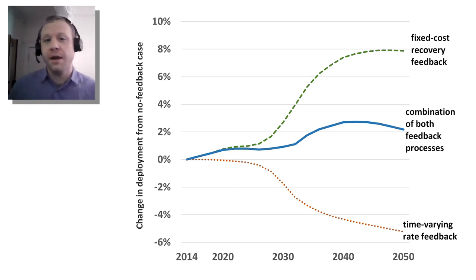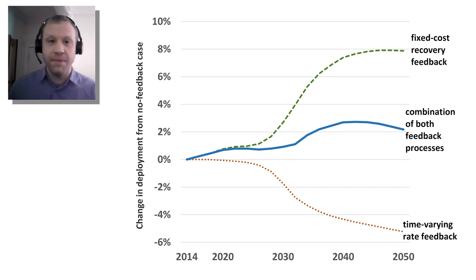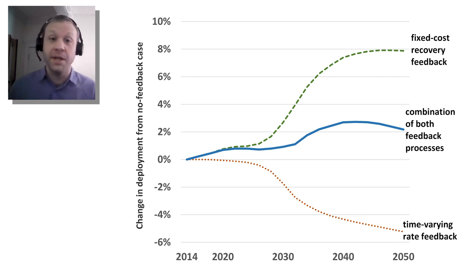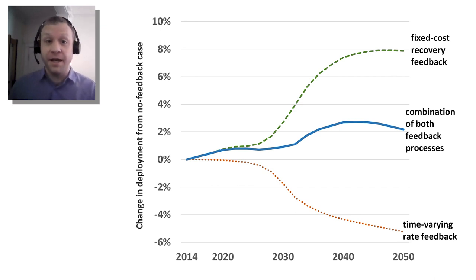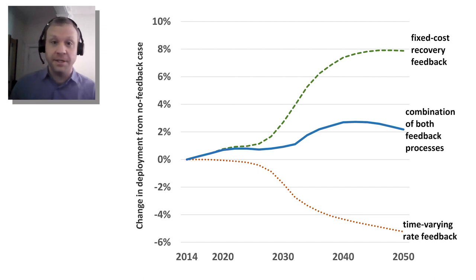The line at the bottom of that graph — the time-varying rate feedback — can you explain it? And does it surprise you that it leads to decreasing PV implementation? This is the second part of the story — an area of research that's received relatively short shrift. Assuming a net metering construct, there's a countervailing feedback that can cool off and regulate the system, offsetting the fixed cost recovery loop. As more PV is installed, we can actually see the peak shift such that the value of energy from PV falls. Under a time-varying structure, net-metered PV is effectively paid less for the energy it provides.